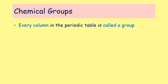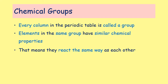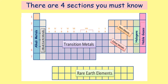The periodic table is also split into groups. Every vertical column is called a group, and elements in the same group have similar chemical properties — meaning they react with other chemicals in the same way. As you go down a group, the elements get heavier and heavier, so elements at the top of the periodic table are more likely to be gases than those at the bottom. There are four sections you need to know about: three groups and one block of elements.